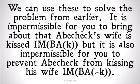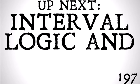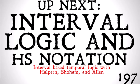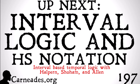We can use this to solve the problem from earlier. It's impermissible for just anyone to bring it about that Abhishek's wife is kissed — just as it's impermissible for just anyone to break my television — but it's also impermissible for you to prevent Abhishek from kissing his wife, or to prevent me from breaking my TV. Up next, we are going to be looking at interval logic and HS notation — interval-based temporal logic with Halpern, Shoham, and Allen. It's a really cool way to express logic that's very different from instant-based logic. Watch this and more at carneades.org, and stay skeptical, everybody.